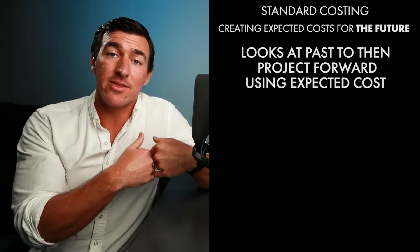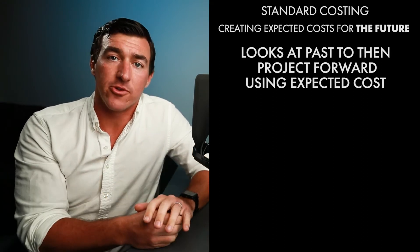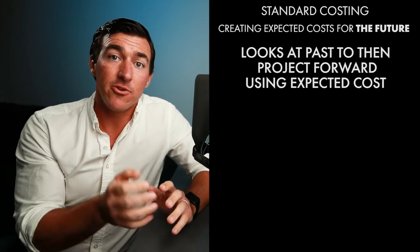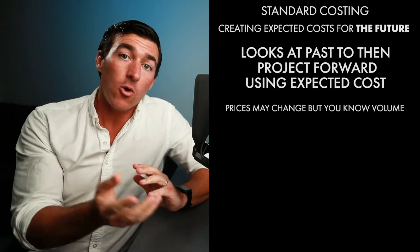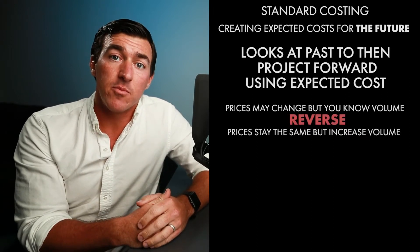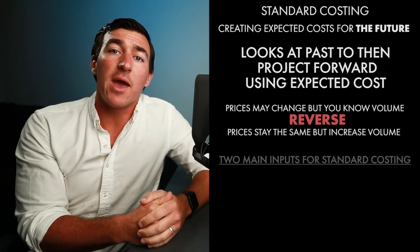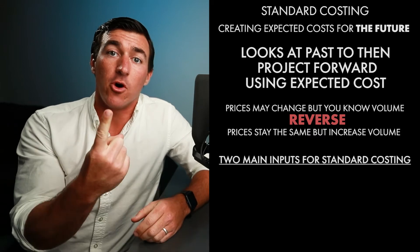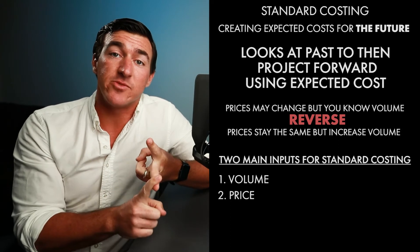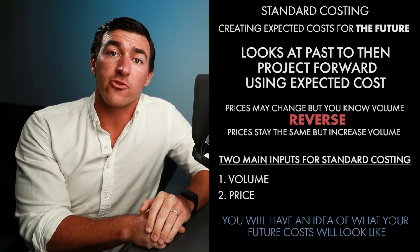While you may not pay the same that you did last time, next year you have an idea of how many hours you're going to pay your employees or how much total supplies you're going to buy. Those prices might change, but you have an idea on the volume. Or it could be the reverse — maybe you know the prices are going to stay the same, but you might create more stuff in the future, so the volume might change. Those are the two main inputs for standard costing: volume and price. If you can get an idea of how much something's going to cost you and how much of it you're going to buy or use, you can have an idea of what your future costs are going to look like.